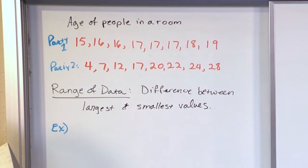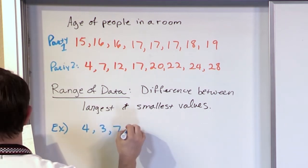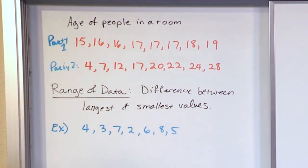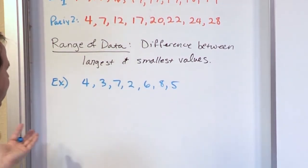So let me give you an example of that. So let's say we're not using the same numbers that we have up here. What if we have 4, 3, 7, 2, 6, 8, and 5, and these could be anything you want. This could be the length of pencils in my desk in centimeters, or it could be the ages of people, whatever.